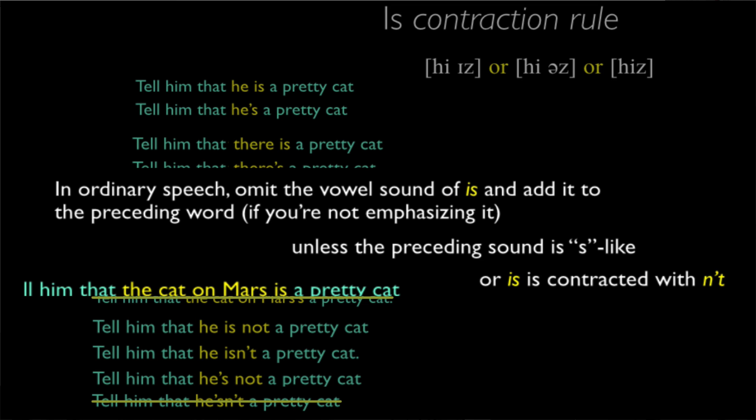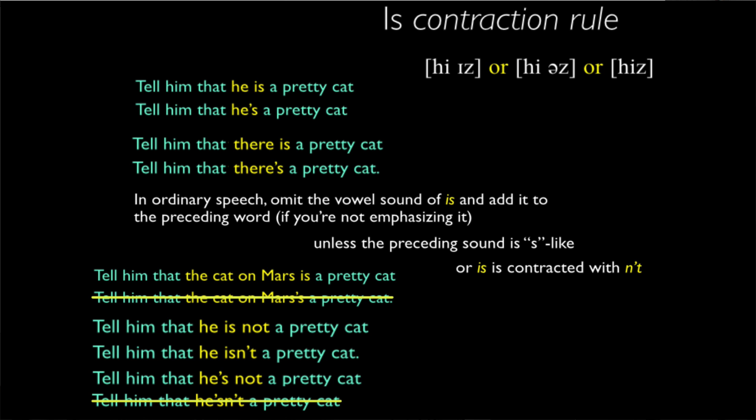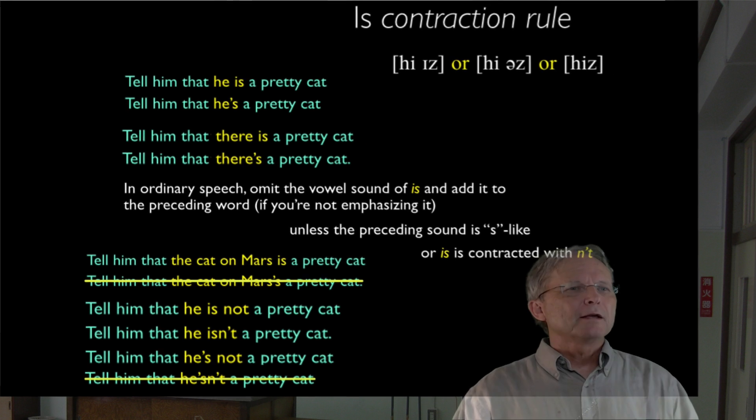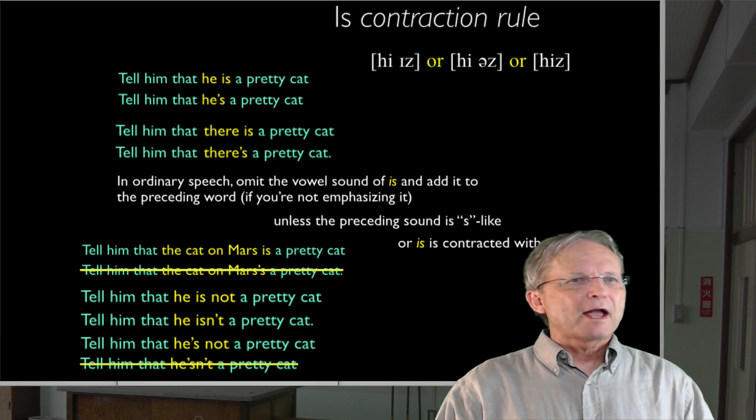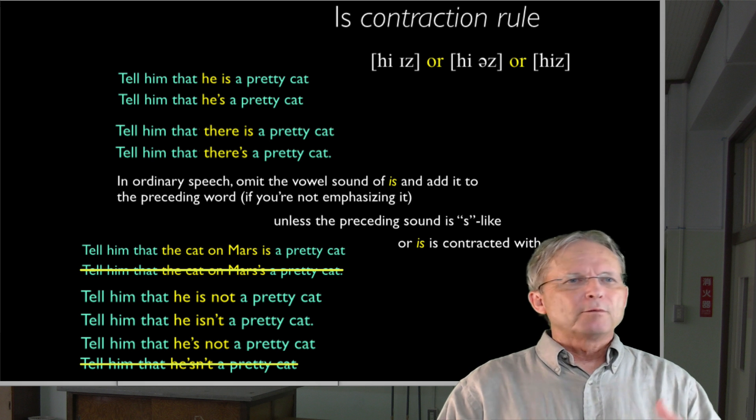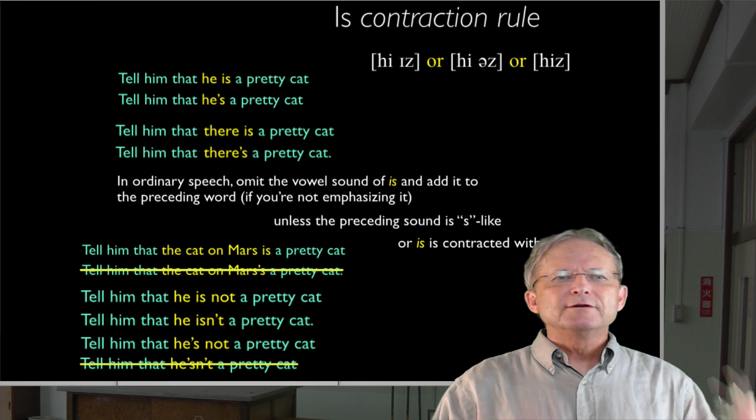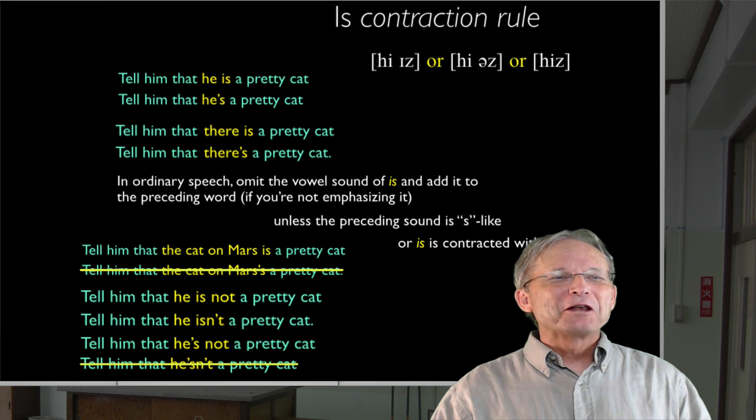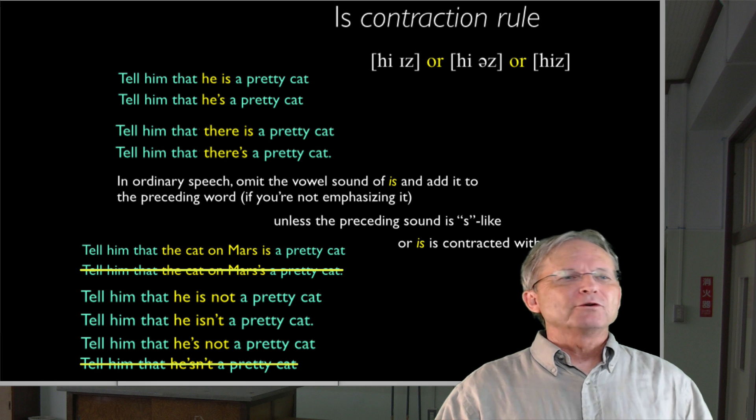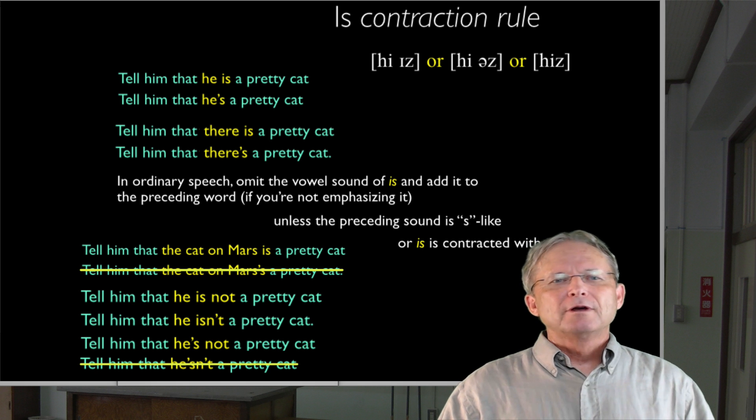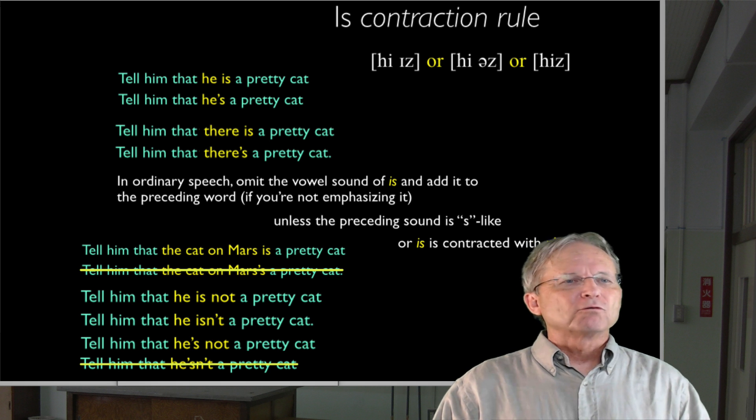I also want you to notice that the grammar of a language that the linguist is interested in is not a normative grammar. That is to say, it isn't the case that some people do actually say or write things like 'tell him that he isn't, tell him that he isn't,' I can't even do it. 'Tell him that he isn't a pretty cat' and there's some style manual that says that they shouldn't or it's not correct or whatever.